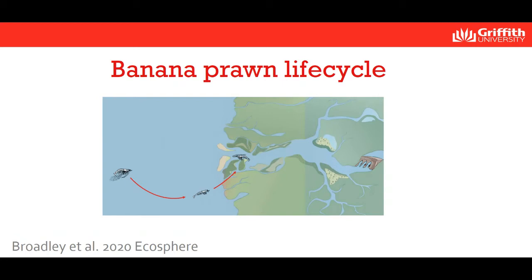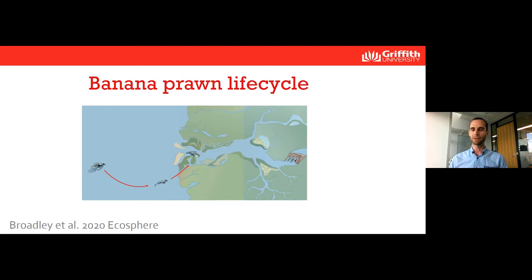Banana prawns spawn out in the Gulf of Carpentaria, and their larvae make their way by tides and currents back into estuaries, where they settle and hide in vegetated habitats or mudflats. In the estuaries they grow very quickly because there's lots of food, but they're also eaten by many predators — the rate of mortality is very high. The prawns stay in the estuaries getting eaten unless they get pushed out into the ocean by fresh water flows. These freshwater flows cue them to ride the plume out into the ocean, where they grow into big prawns, spawn new babies, and can be caught in the fishery.